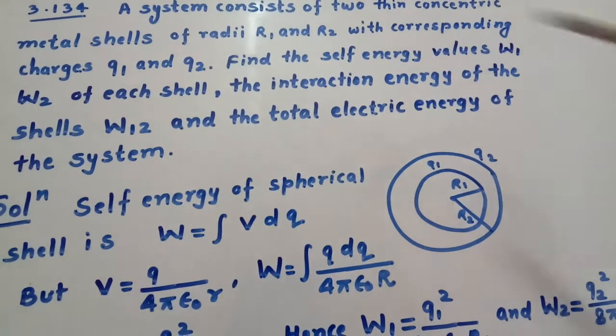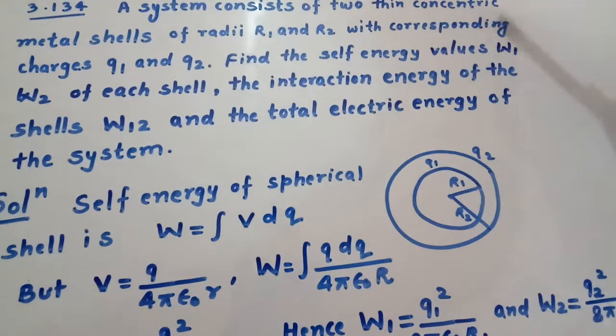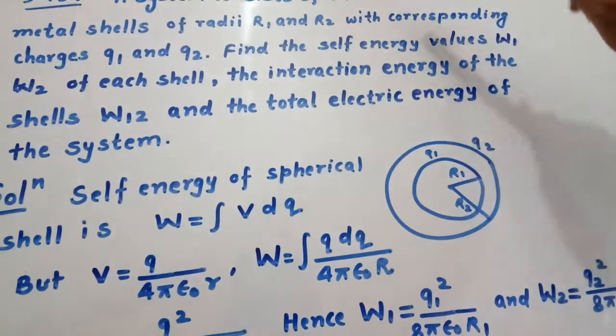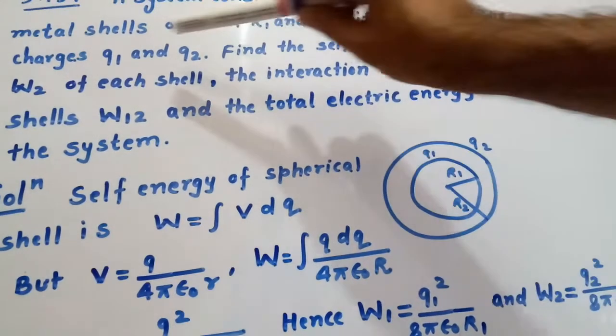The question is: a system consists of two thin concentric metal shells of radii r1 and r2 with corresponding charges q1 and q2.